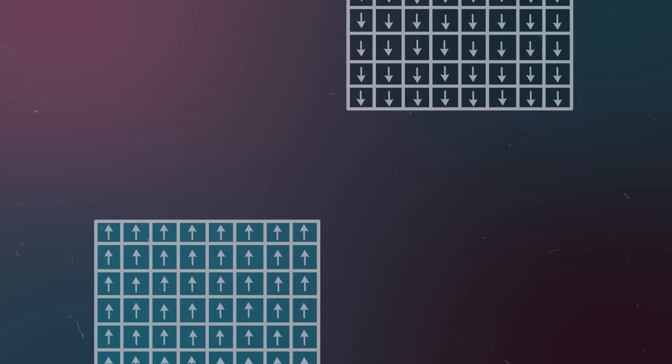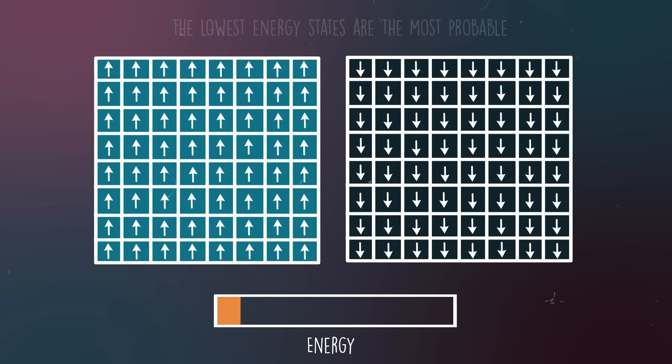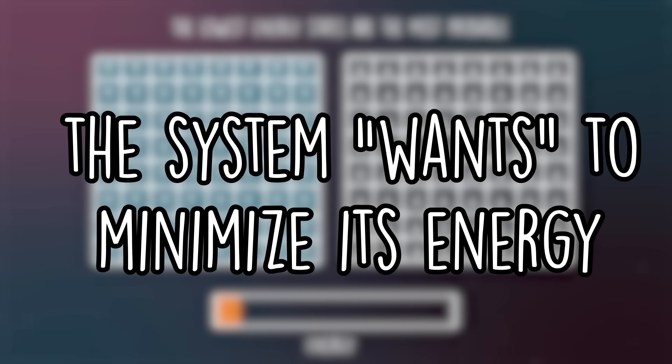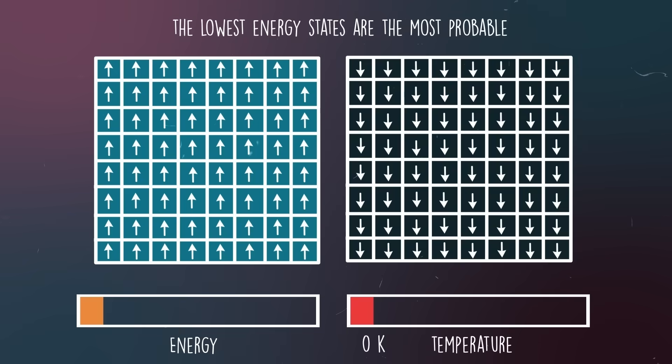The same goes here. The configurations we'll most likely see are the ones that have the lowest energies. In other words, the lowest energy states are the most probable. We can say that the system wants to minimize its energy. At absolute zero, the most probable states are the all-up and all-down configurations. But what happens when we increase temperature?